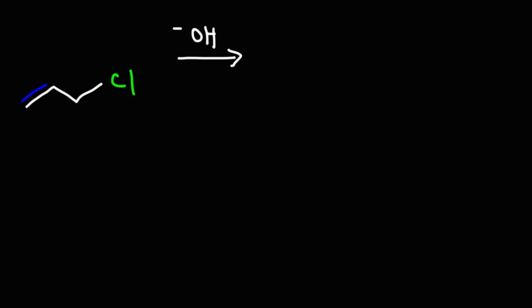What we have here is a special type of halide — this is known as an allylic halide. Allylic halides can work well with both SN1 and SN2 reactions. Now, this is a primary allylic halide.